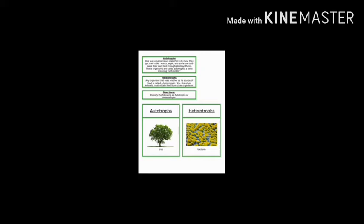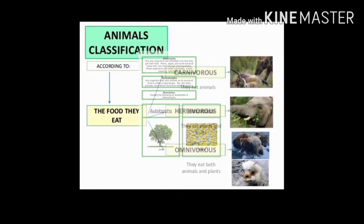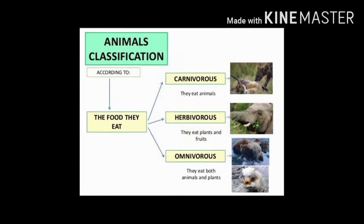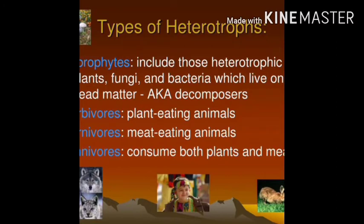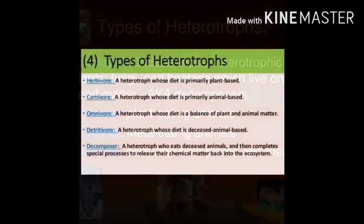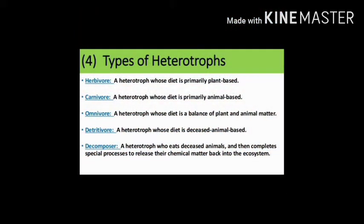Herbivorous animals are animals which eat plants and plant products, for example rabbit, goat, camel, cow, and sheep. Carnivorous animals are animals which eat the flesh or meat of other animals, like lion, tiger, vulture, and wolf. Omnivorous animals are animals which eat both plants and animals and their products, for example dog, cat, crow, and bear.